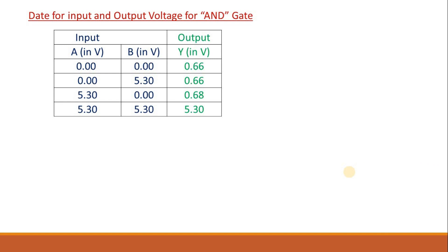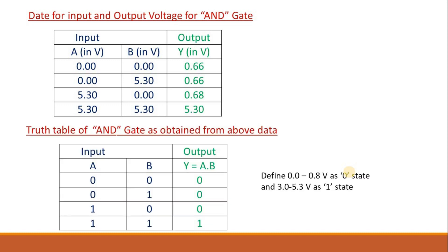This is the data for input and output voltage for an AND gate which we have constructed. If you look at this data carefully and define 0 to 0.8 volt as 0 state and 3.0 to 5.3 V as 1 state, then use this definition and substitute 1 and 0 state accordingly in the voltages. If you use that definition, you will get this truth table: 0, 0, 0; 0, 1, 0; 1, 0, 0; 1, 1, 1. This is exactly the truth table for an AND gate. That means we can be sure that whatever circuit we have constructed is the circuit for an AND gate.